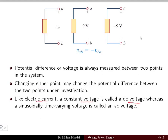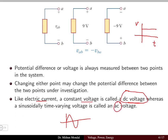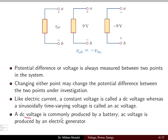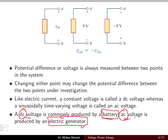Like electric current, a constant voltage is called a DC voltage. When we have a sinusoidally varying quantity, it is known as AC voltage. A DC voltage is commonly produced by a battery, where chemical energy is converted into electrical energy. An electric generator can be a DC or AC generator; however, three-phase AC generators — known as synchronous generators or alternators — produce AC voltage.